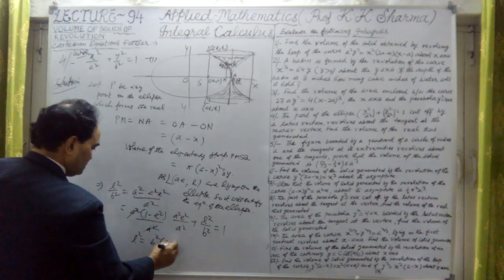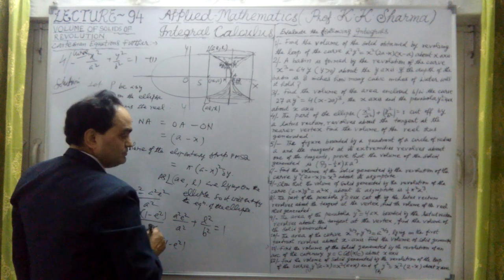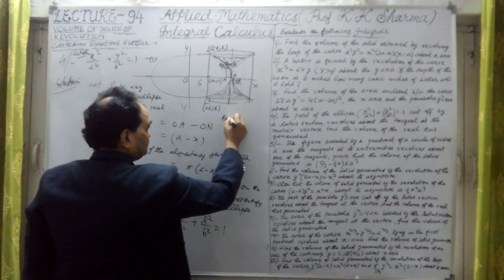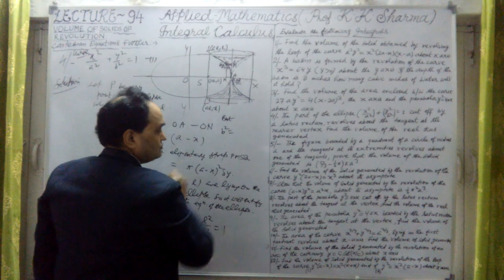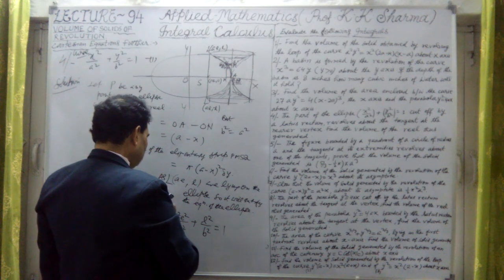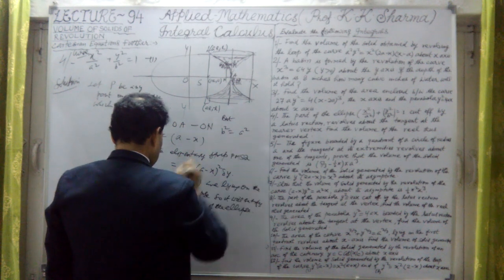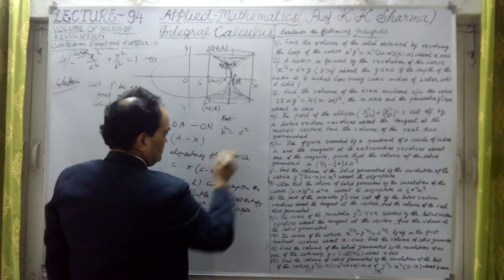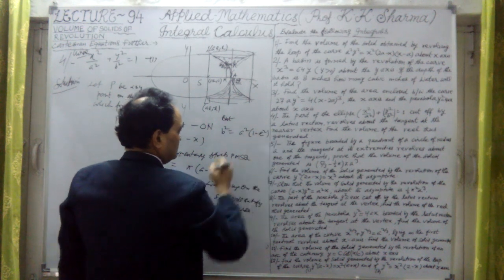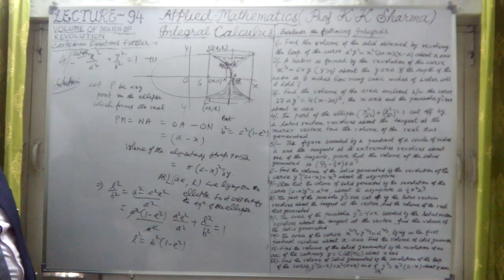So L squared equals B squared times (1 minus E squared). But we know that B squared equals A squared times (1 minus E squared). If I substitute here, the A squared cancels out, so L squared equals B squared times (1 minus E squared) — and since L square upon B square equals B square upon A square, therefore L squared equals B to the fourth over A squared.